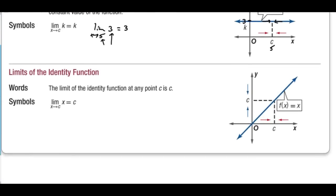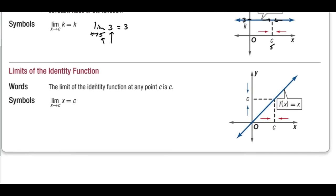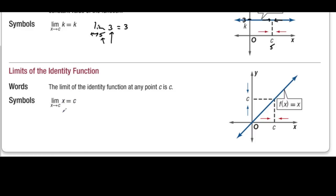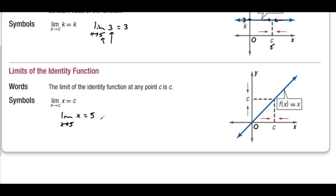Limits of the identity function. The limit of the identity function at any point c is c. So the limit as x approaches c of x is equal to c. For example, the limit as x approaches 5 of x equals 5. If we're approaching a value of 5 on the x-axis, then because the function is y equals x, the y value will be approaching 5 as well.